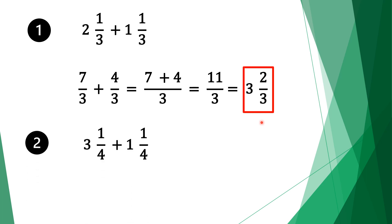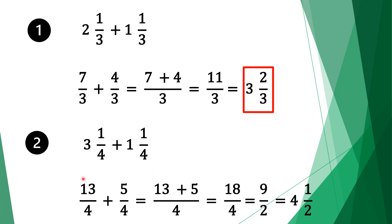Moving on to our second question, we have 3 and 1 quarter plus 1 and 1 quarter. Again we convert to normal fractions. Multiply the denominator by the whole number: 4 times 3 is 12, plus 1 is 13. Bring the denominator 4 down. Bring the plus sign. Do the same for the second fraction: 4 times 1 is 4, plus 1 is 5, and bring the denominator 4.